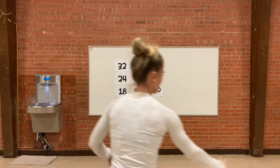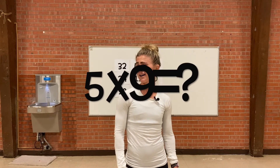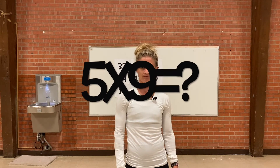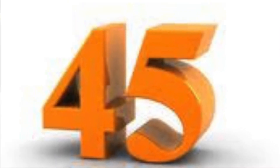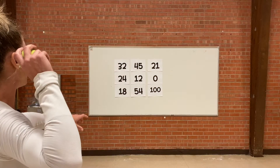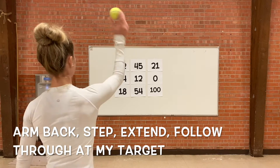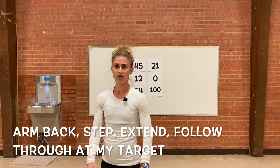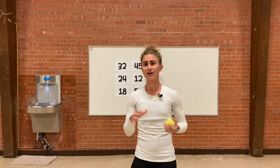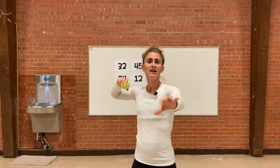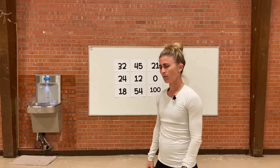Arm back behind my ear, step, extend, follow through at my target. What is five times nine? Five times nine is 45! 45 is my target — arm back behind my ear, step, extend, follow through at my target. Perfect! If you don't always hit your target right away, that is totally fine — just keep practicing, keep doing the correct cues, stepping in opposition, and following through at your target.